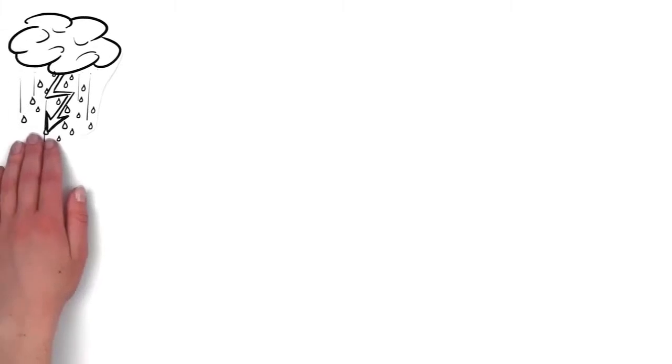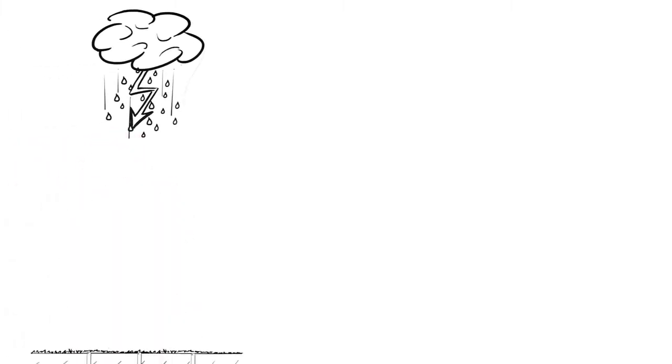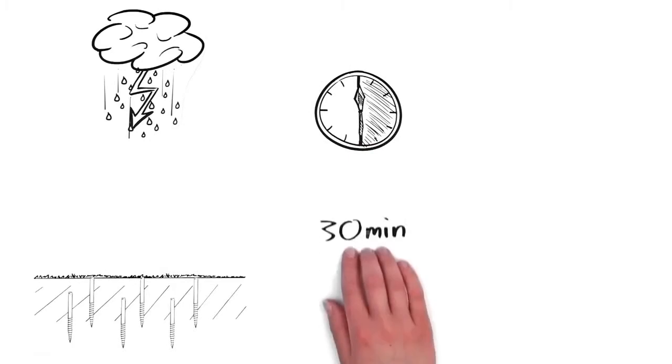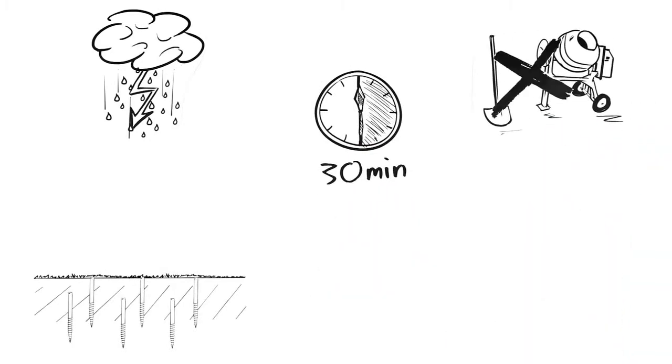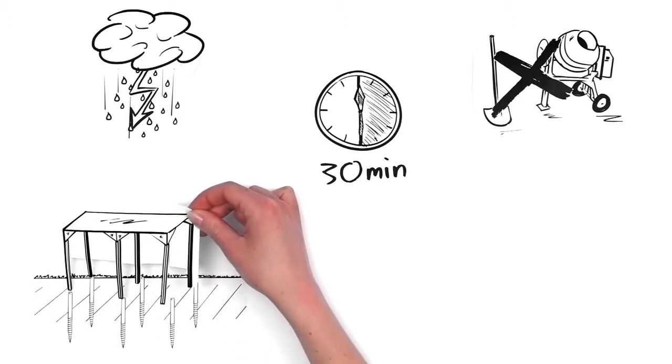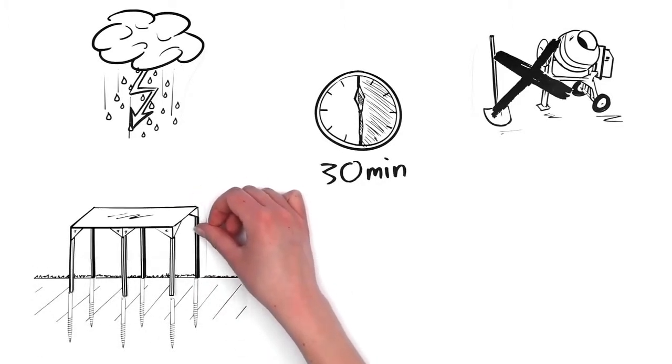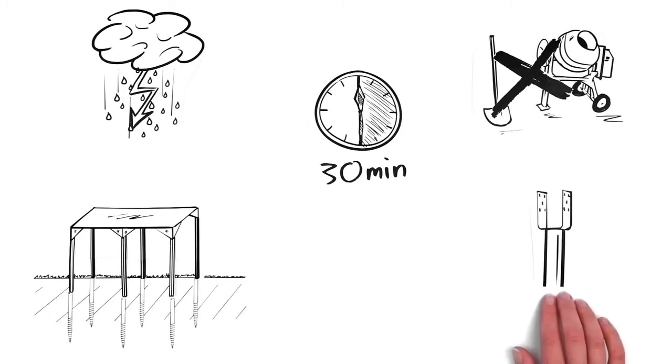Although it's raining on the set-up day, the six ground screws are in the ground after just half an hour. And there's no digging or concreting involved. Mr. Smith immediately begins mounting his carport on the U-profiles because the ground screws can bear loads right away.